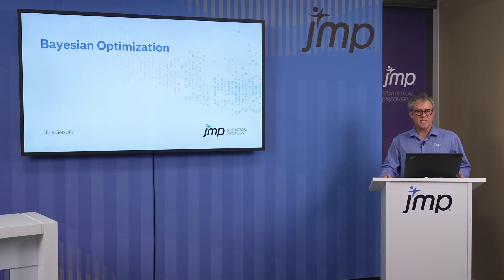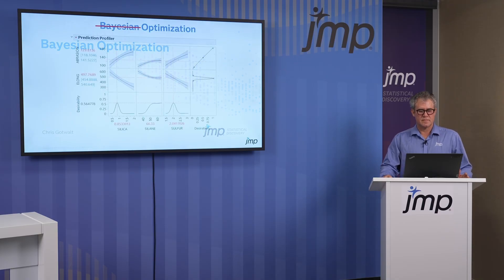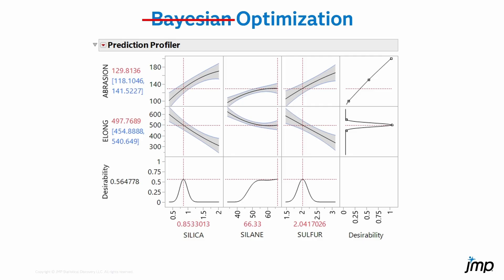One of the most exciting new platforms in JMP Pro 19 is the Bayesian optimization platform. Before going into it, let's think about how JMP users optimize products and processes. We collect some data either with a starting design or pulling data from a database. It can take a lot of time and resources to get enough data that we can trust the models we're working with, but once we do trust them, we go into the profiler to optimize those models.